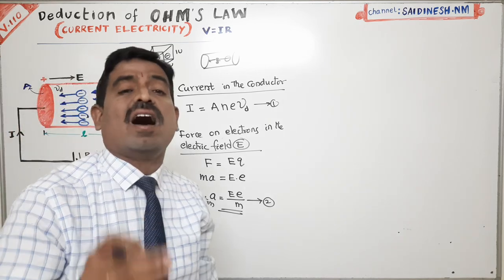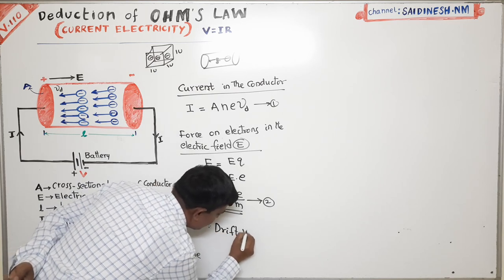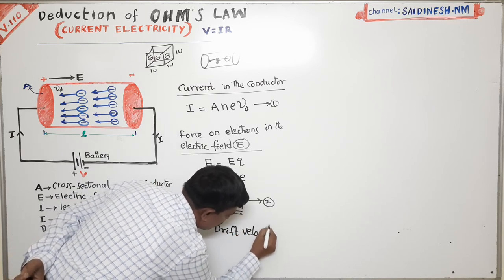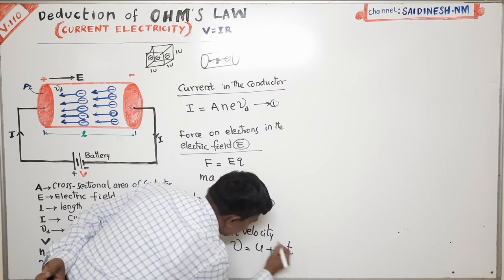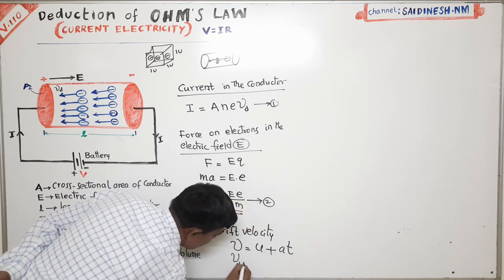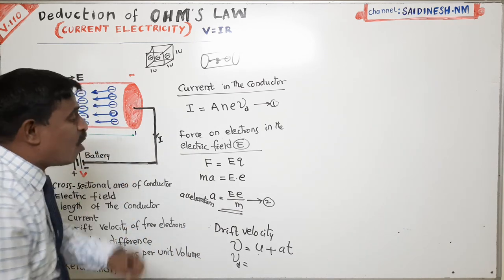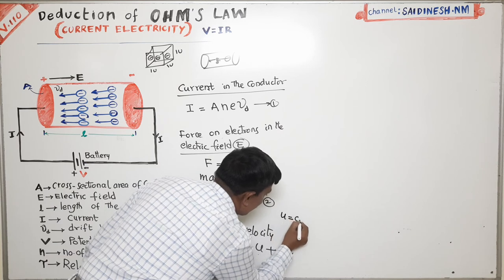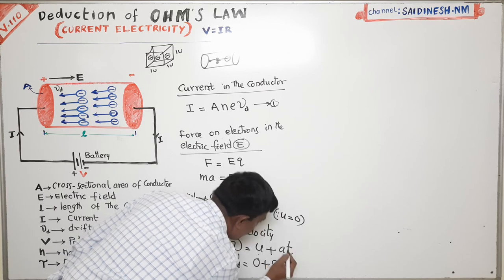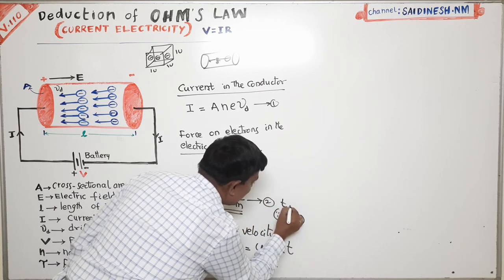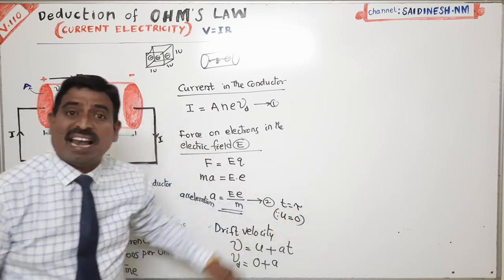That velocity we call the drift velocity, or final velocity. Using the equation V equals U plus AT: V means drift velocity, U means initial velocity which is zero, A means acceleration, and small t is the relaxation time, represented by tau (τ).